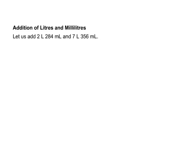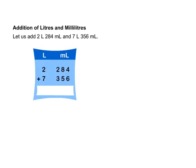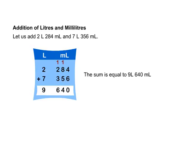Addition of liters and milliliters. Let us add 2 liters 284 milliliters and 7 liters 356 milliliters. Arrange the numbers in columns, then add 284 ml to 356 ml and 2 liters to 7 liters. The sum is equal to 9 liters 640 milliliters. Let us try one more example: add 2 liters 325 milliliters, 1 liter 870 milliliters, and 4 liters 29 milliliters.